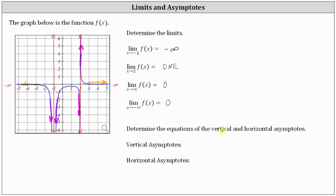For the second part of the question, we're asked to determine the equations of the vertical and horizontal asymptotes. We actually already sketched the vertical asymptotes in red — these are the vertical lines the graph approaches but doesn't cross. The vertical asymptote on the left is x equals negative one. The vertical asymptote on the right is x equals two. The horizontal asymptote is indicated by the end behavior: because the function values approach zero as x approaches both positive and negative infinity, the horizontal asymptote is the x-axis, which has an equation of y equals zero.